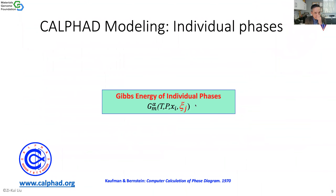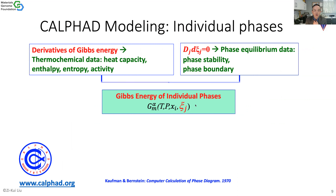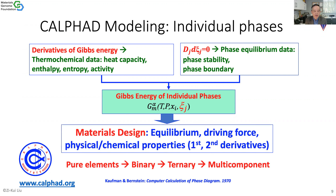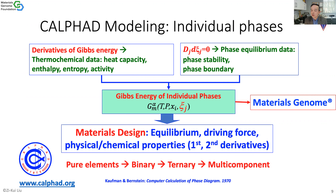CALPHAD modeling is really about developing the Gibbs energy of individual phases as a function of temperature, pressure, composition, and internal degree of freedom. We need data from the derivatives of Gibbs energy from DFT and from machine learning, which will make this process much more efficient. We also need phase equilibrium data to refine the parameters. Our hope is that in the future we may not need this step or can use Zentropy. We start with pure elements, binary, ternary, and multi-component systems, then do material design — the equilibrium driving forces, physical and chemical properties, the first and second derivatives. That's what we call the materials genome.